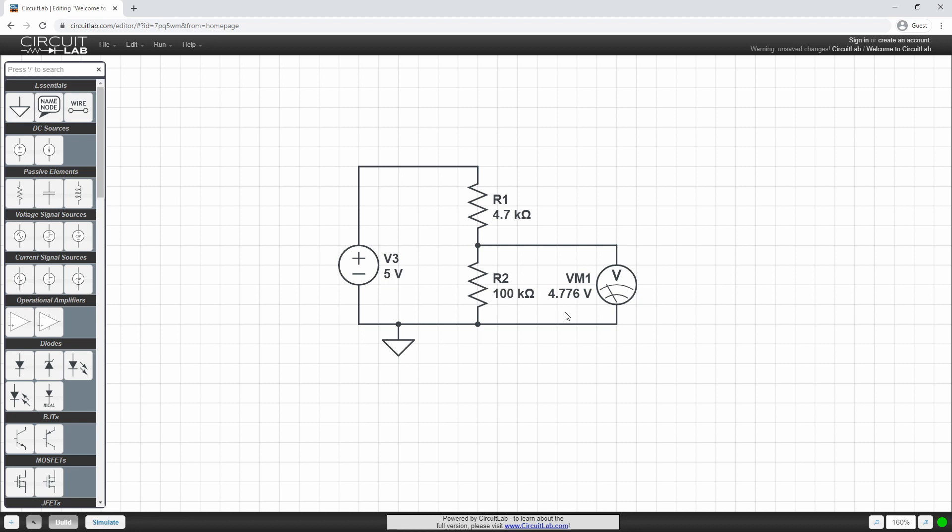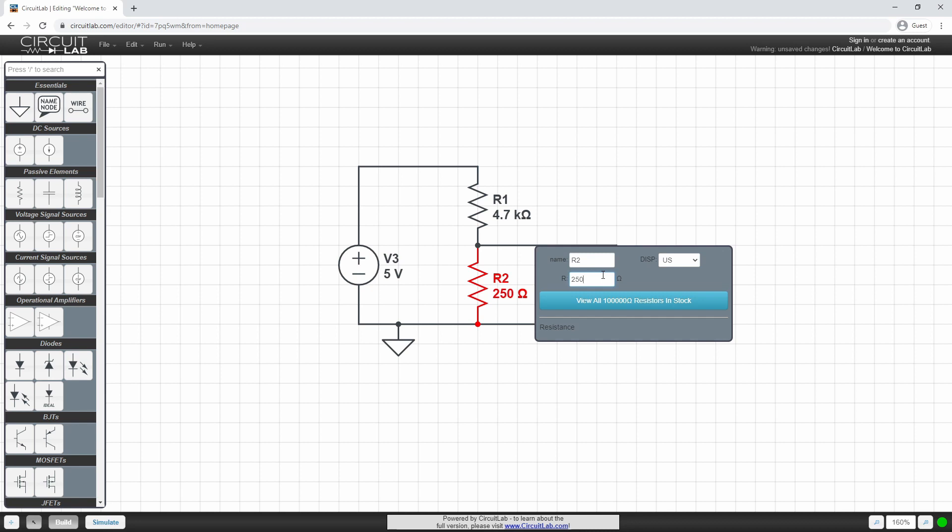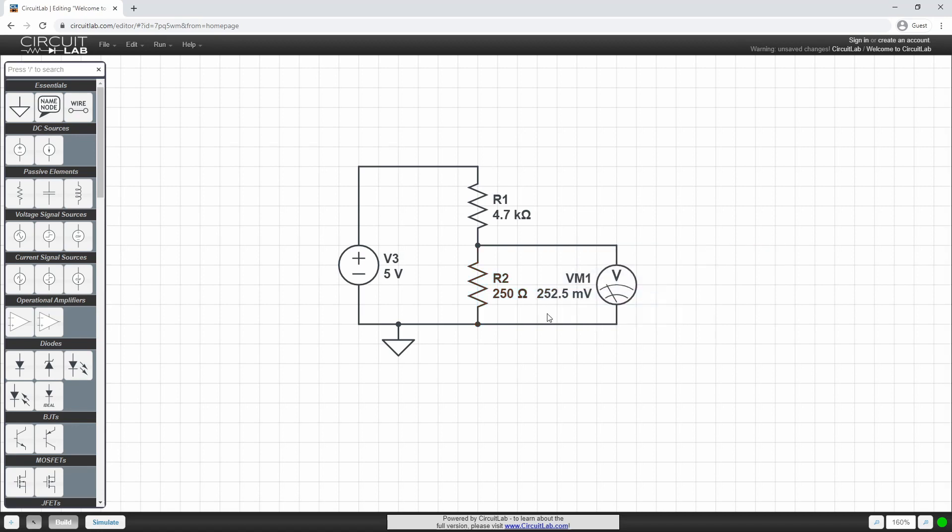So this shows us at room temperature conditions the input analog voltage into the microcontroller is fairly close to the maximum 5 volts. However, if we change this to say 250 ohms, which is fairly close to a resistance of a typical thermistor that we use in 3D printing at say print temperatures like 200 or 250 degrees Celsius, you'll see here that this voltage has dropped to 252 millivolts. So almost 0 volts.